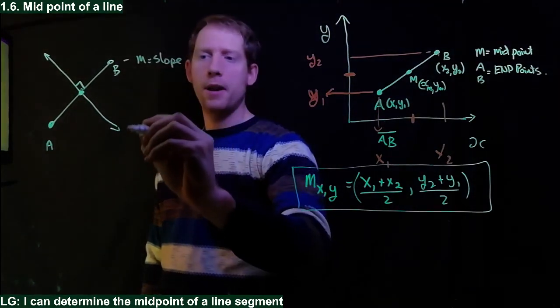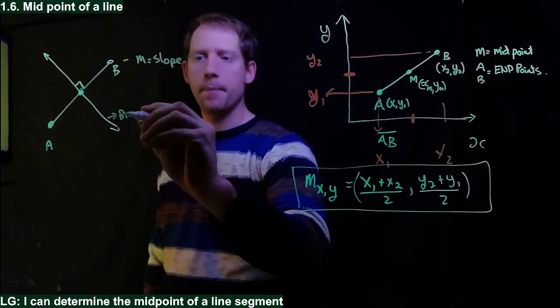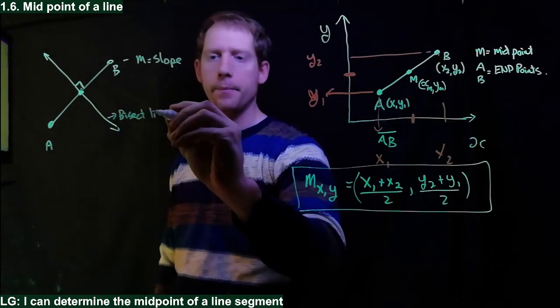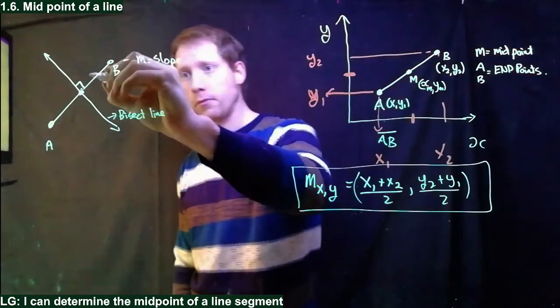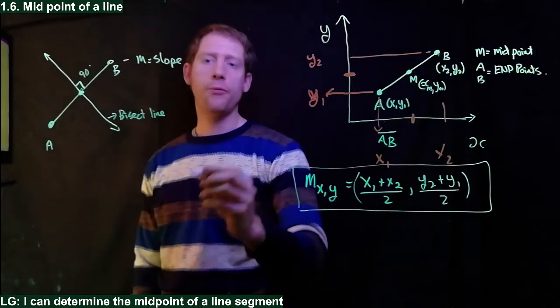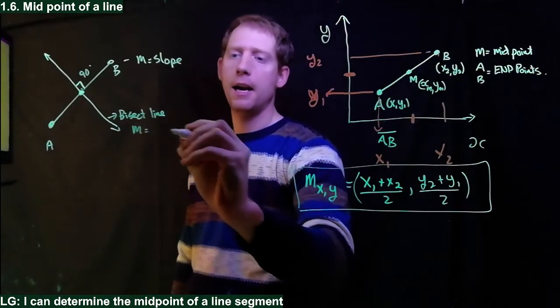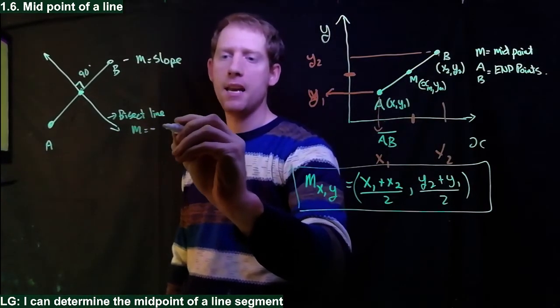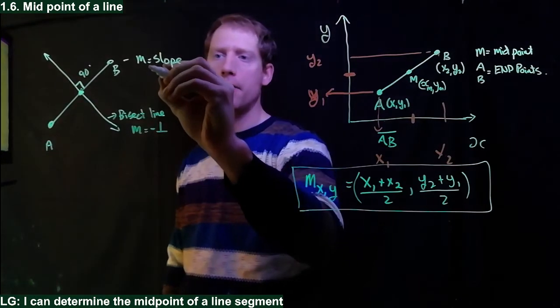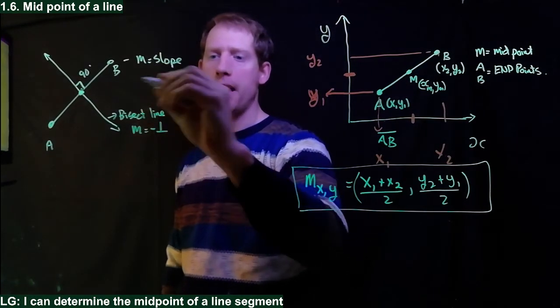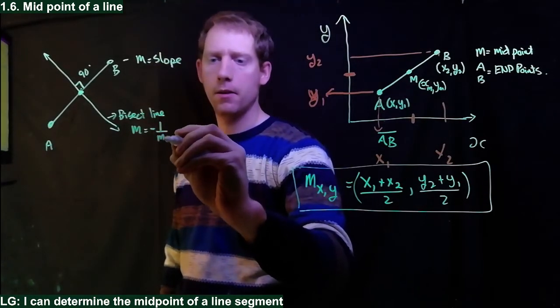And to determine this is called the bisect line, and it's 90 degrees to your other line. You can find the slope here - it's just going to be negative one over the slope of AB.